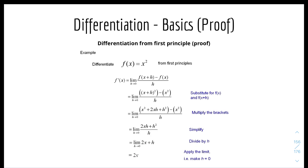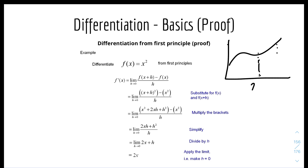Next is differentiation from first principles. This is the proof behind the differentiation rule. Essentially, you have a curve and set two points at x and x plus h, with corresponding y values y and y plus h. You then use limits to evaluate and simplify the expression. There are more detailed videos about this online — this is just a basic overview.